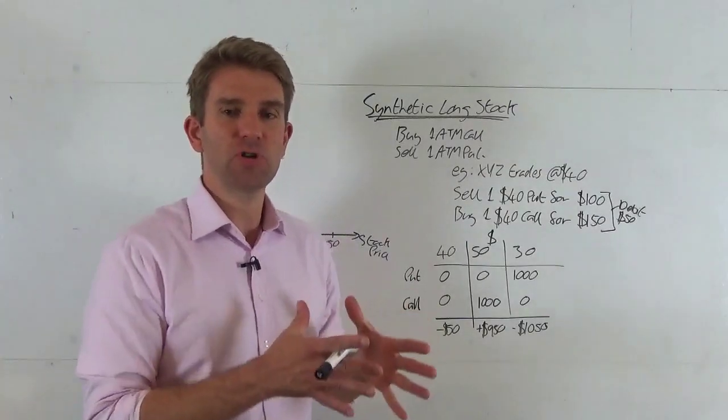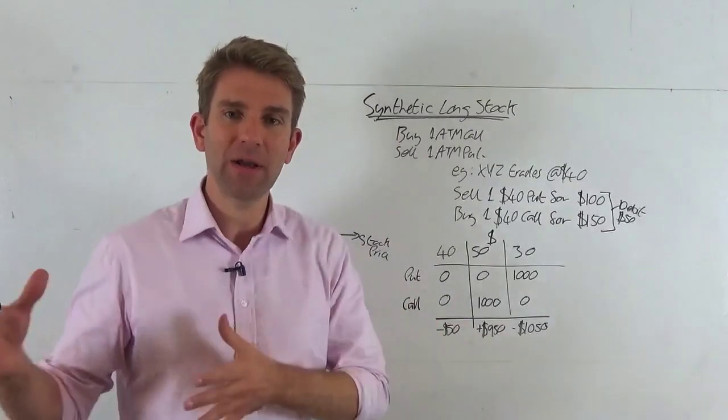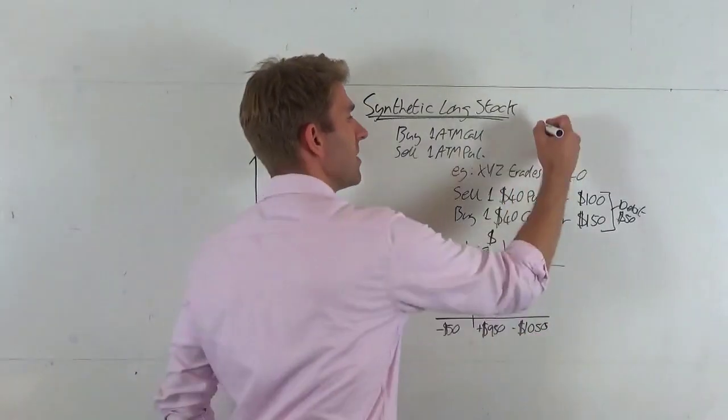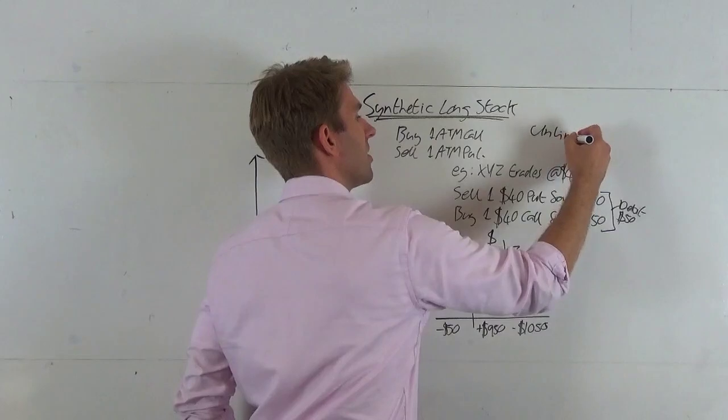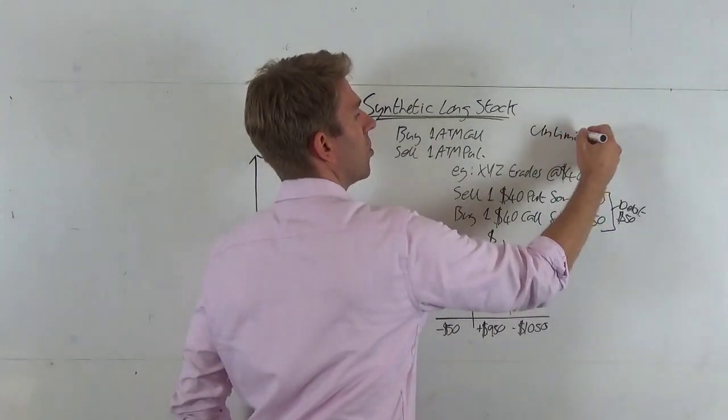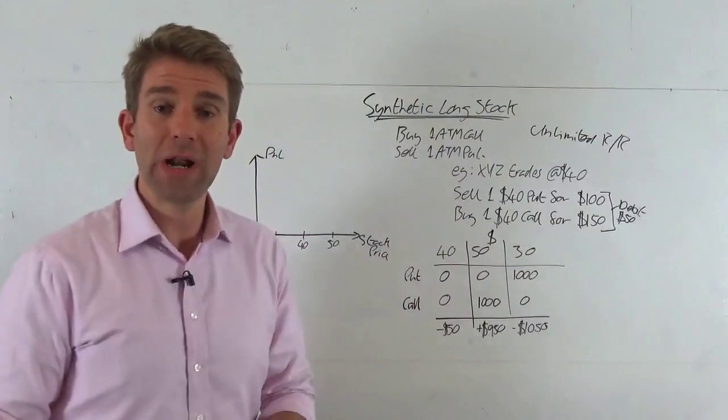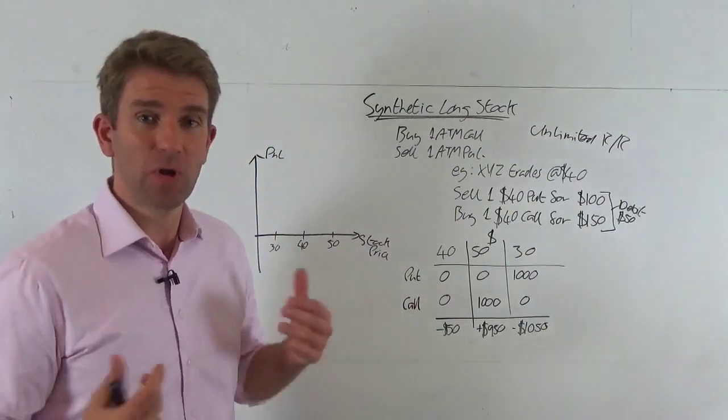We're going to lose money if the stock goes down. Now these are unlimited, just like a normal stock long would be: unlimited risk and reward. So unlimited profits but unlimited risk as well, so you've got to have some other risk management tool in place.